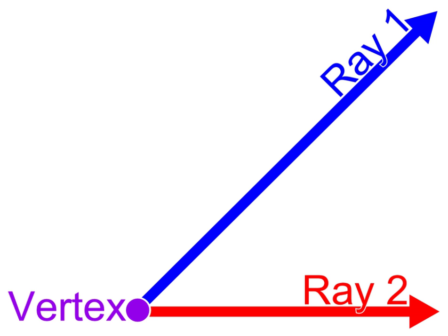Similar statements hold in space; for example, the spherical angle formed by two great circles on a sphere is the dihedral angle between the planes determined by the great circles.